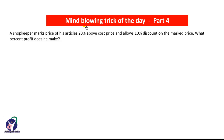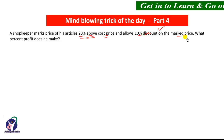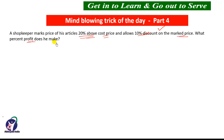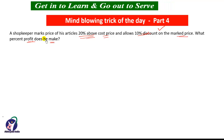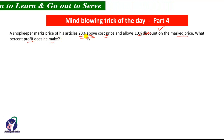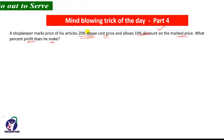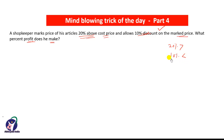Friends, welcome to the mind blowing trick of the day, part 4. Here is the first question on the screen: A shopkeeper marks the price of his articles 20% above the cost price and allows 10% discount on the marked price. What percent profit does he make in this transaction?